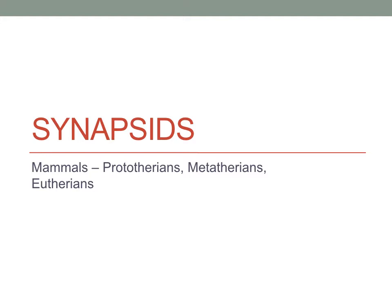The last part of our group are the synapsids. This is the mammals, including monotremes, metatherians, and eutherians. This is certainly the most important group for us, being that we are synapsids.